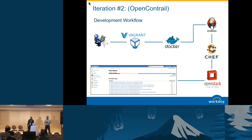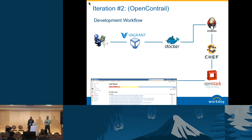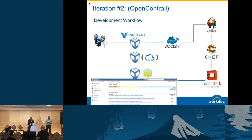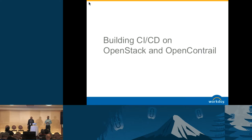In the next iteration, we started with Neutron with ML2 plugin, which worked fine, and we wanted to use the OpenContrail plugin. To do that, we had to create new virtual machines. One reason they could not be containers is that we were testing IP tables for our SDN controller, and it's not really feasible to do that in containers — Docker has its own IP tables and we didn't want to make it complicated. That's why we had to split it.